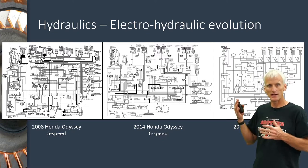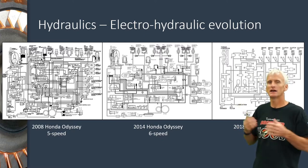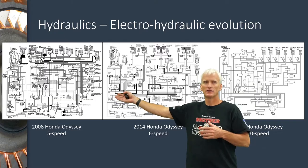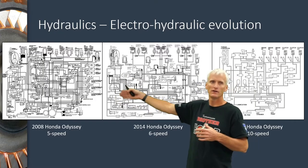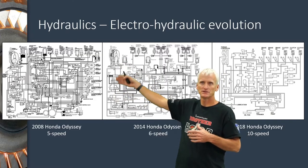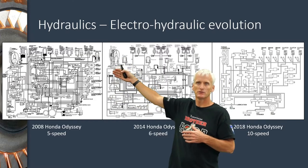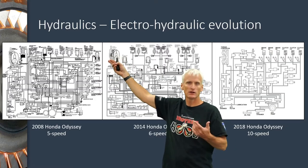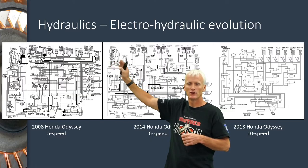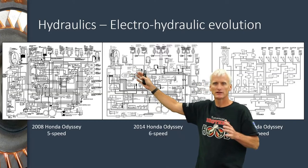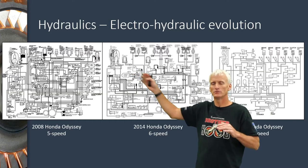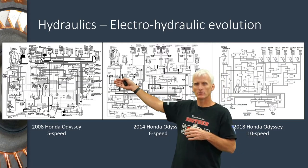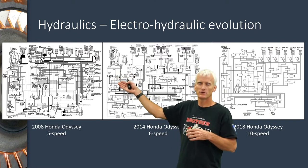On this slide, I'm showing the evolution that's occurred, using a Honda as an example. The Honda 5-speed hydraulic schematic shows the electronics along the edges — only six solenoids — and the hydraulic clutches along the top, with the torque converter on the far side. We'll get into hydraulic schematics in depth later with specific units, but I want to show how complicated that hydraulic schematic is for a five-speed transmission.